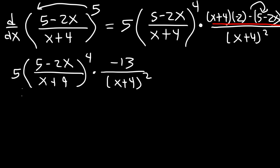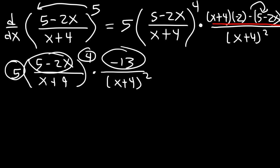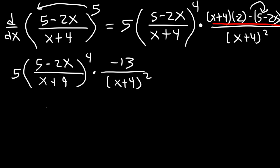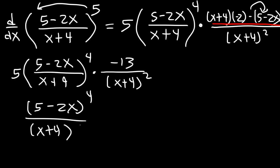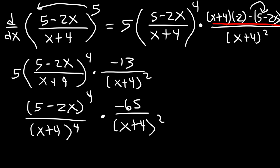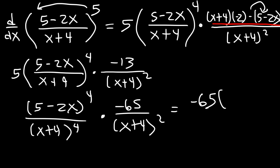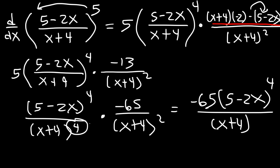Multiplying 5 and negative 13 gives negative 65. Separating the expression, we get 5 minus 2x to the 4th power divided by x plus 4 to the 4th power, times negative 65 over x plus 4 squared. The x plus 4 to the 4th and x plus 4 squared combine — 4 plus 2 is 6. So the fully simplified final answer is negative 65 times 5 minus 2x raised to the 4th power, divided by x plus 4 to the 6th power.